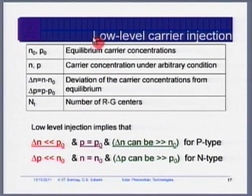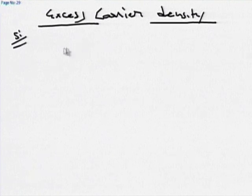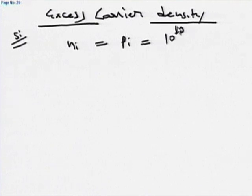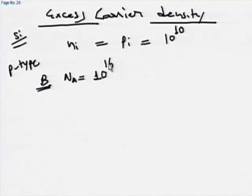There is band-to-band recombination and Auger recombination in solar cells. Now, another important concept is excess carrier density. Let me take the case of silicon: n_i = p_i = 10¹⁰. For a p-type semiconductor doped with boron at acceptor concentration N_A = 10¹⁶ per cm³, p_0 equals 10¹⁶.